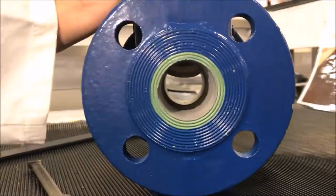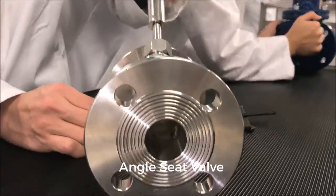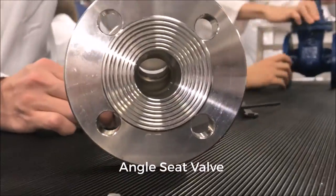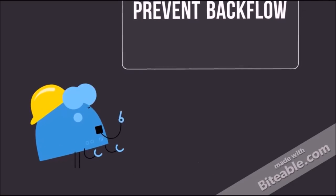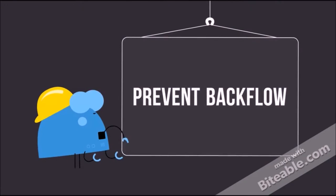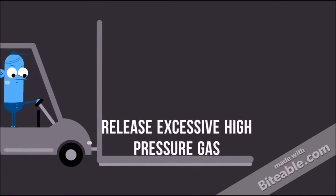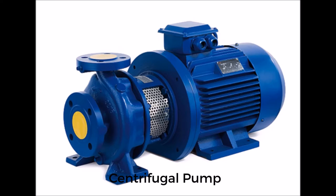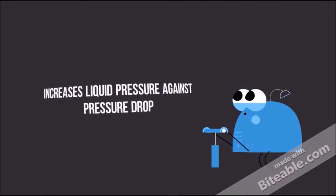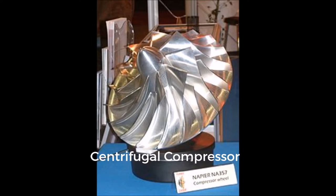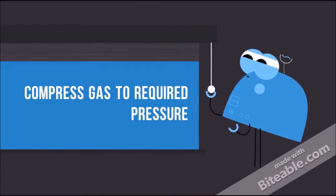The wedge gate valve is designed to fully open or close the flow. As for the angle seat valves, they are used to control the flow rate. The non-return valve is placed after the pump to prevent backflow. Apart from that, the pressure relief valve is used to release excessive high pressure gas. As for the centrifugal pump, it increases the pressure of liquid against the pressure drop, while the centrifugal compressor is used to compress the gas to the required pressure.